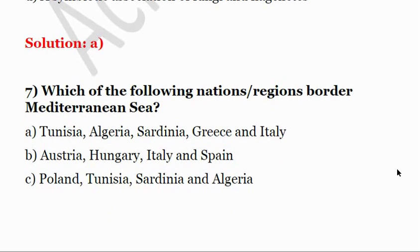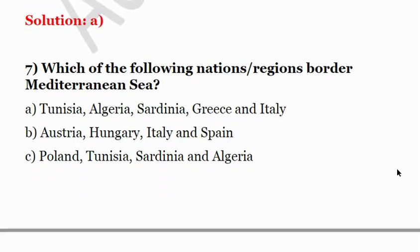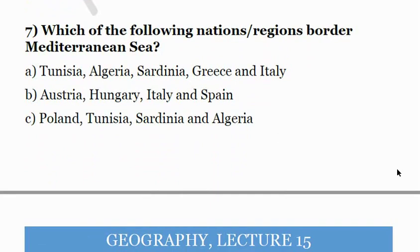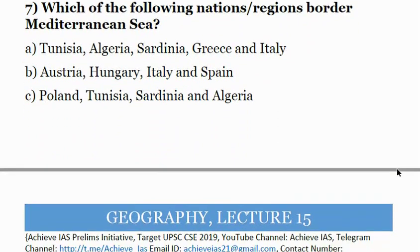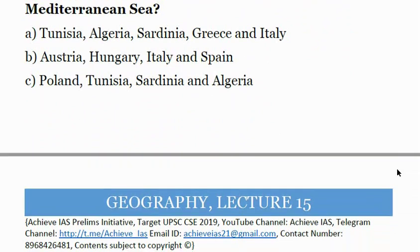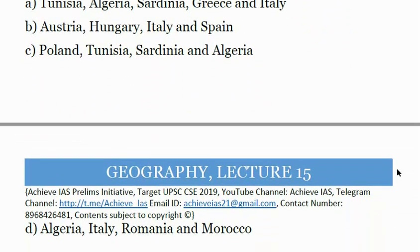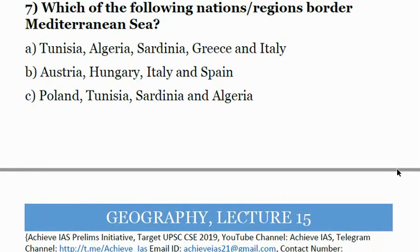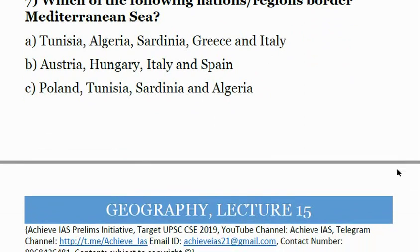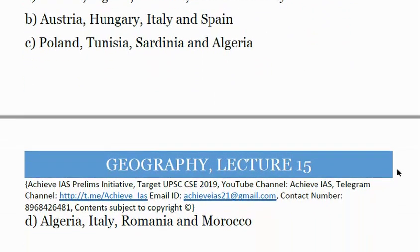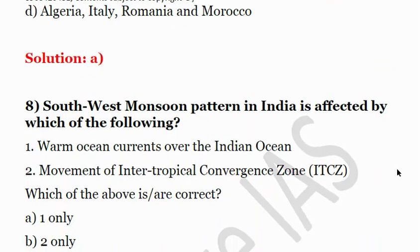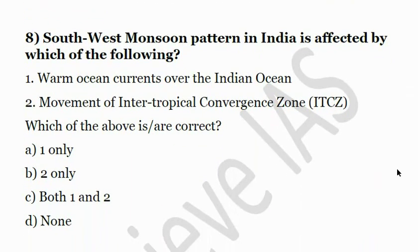Seventh question: Which of the following nations/regions border the Mediterranean Sea? Option A: Tunisia, Algeria, Sardinia, Greece, and Italy. Option B: Austria, Hungary, Italy, and Spain. Option C: Poland, Tunisia, Sardinia, and Algeria. Option D: Algeria, Italy, Romania, and Morocco. The correct answer is A — Tunisia, Algeria, Sardinia, Greece, and Italy, among others detailed in the explanation PDFs.